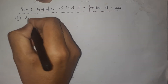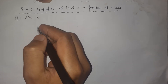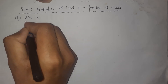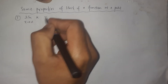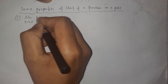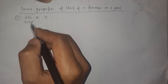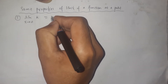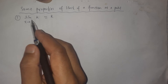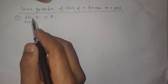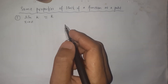The first property is about the limit of a constant function. The limit of K when the variable X approaches to a constant number a — at this situation the limit will be the same as the constant number K. So the limit of any constant function is the same as the constant number itself. This is the first property on the limit.